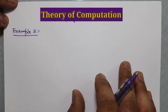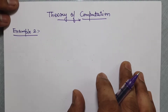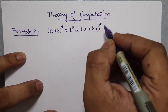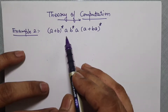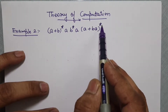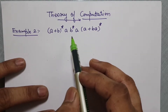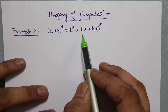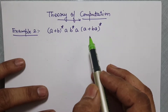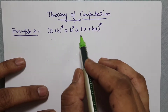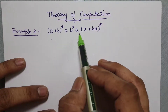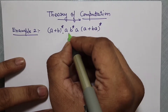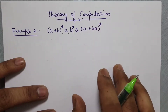Example number two is: (a+b)* ab* a (a+ba)*. Looking at this regular expression we just don't have to think it is very difficult — it is very simple if you follow the steps. First thing we have to see is the concatenation points, and there are one, two, three, and four concatenation points.